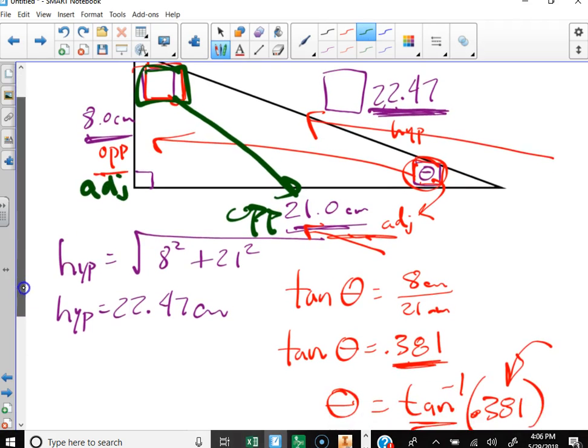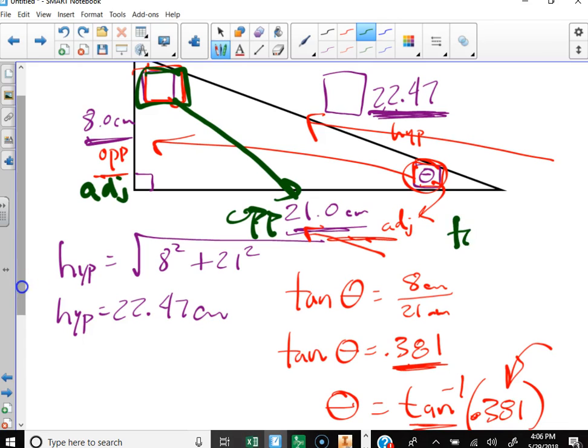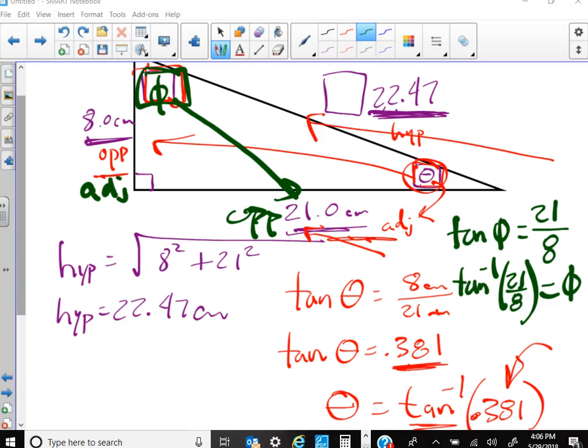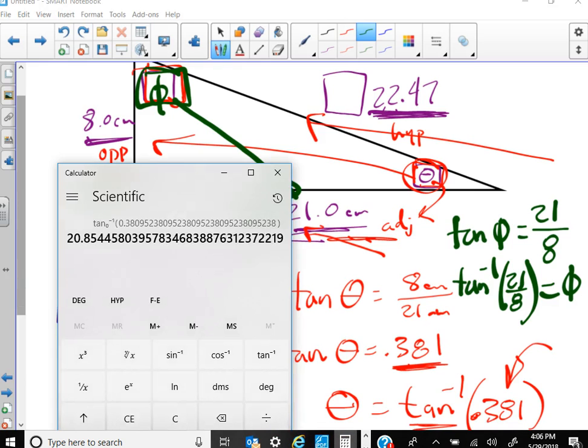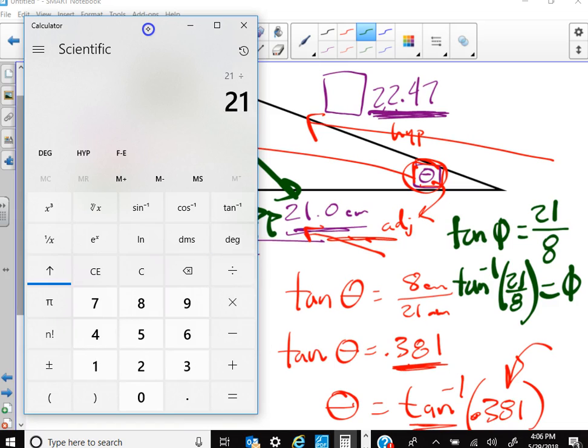So for that one, I would say the tangent of, I won't call it theta, we'll call it phi, is equal to 21 over 8. And then I would take the inverse tangent of 21 over 8, whatever that is, to get phi, that upper angle there. Let's see what we can do. So I do 21 divided by 8, get an answer, and do the inverse tangent.